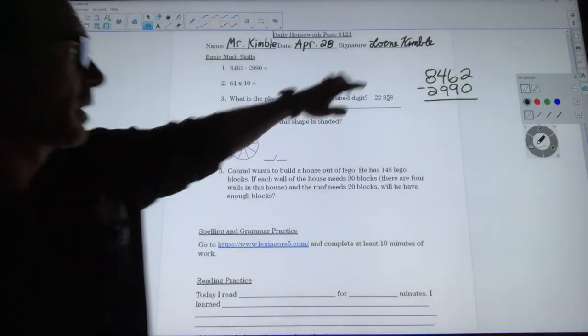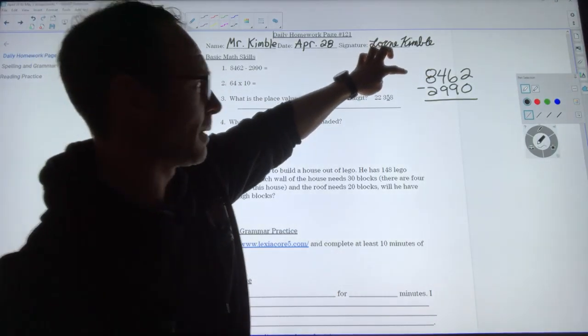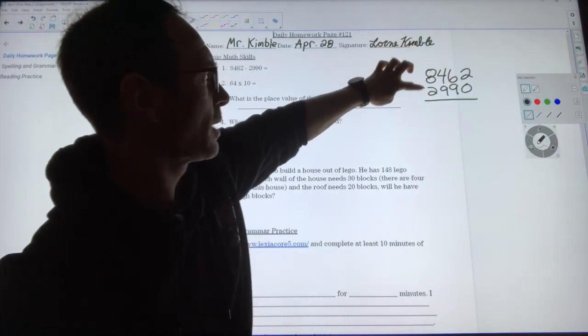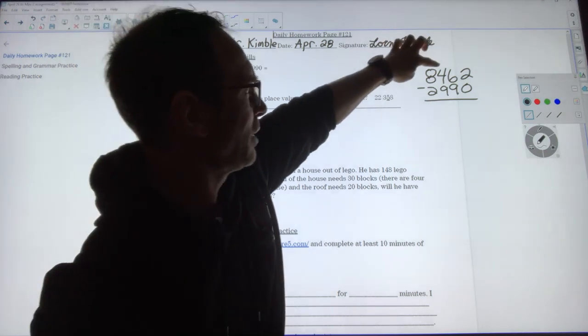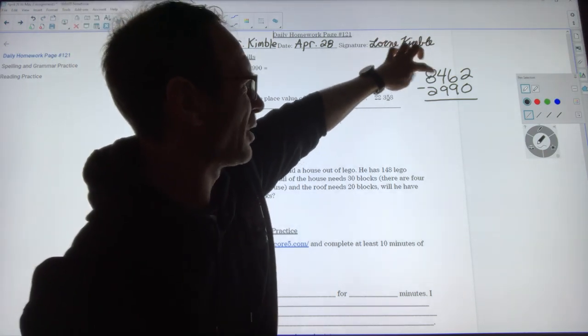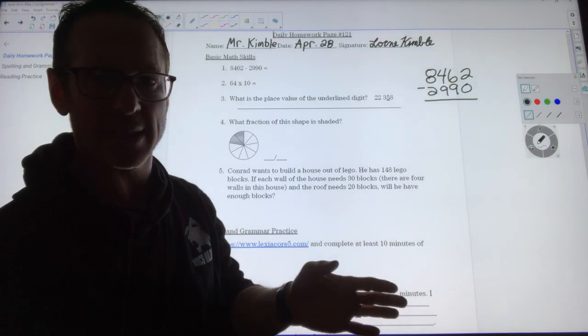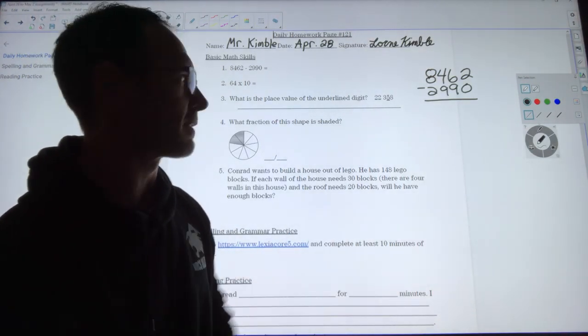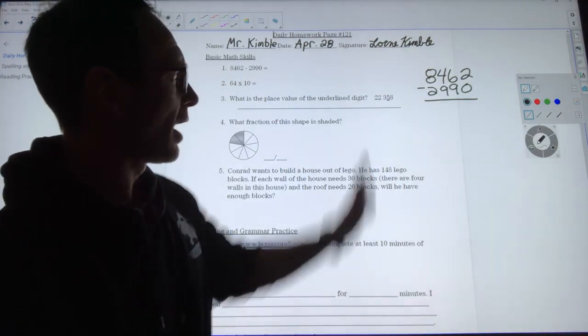Before I start, I'm gonna take a quick look and just make an estimate. I know that 8,000 minus 2,000 is 6,000. It looks like there's gonna be some borrowing down here, so it looks like it's gonna be below 6,000, probably above 5,000, somewhere between 5,000 and 6,000.